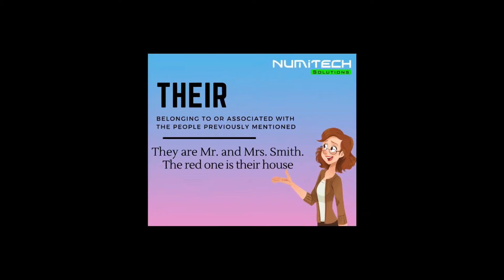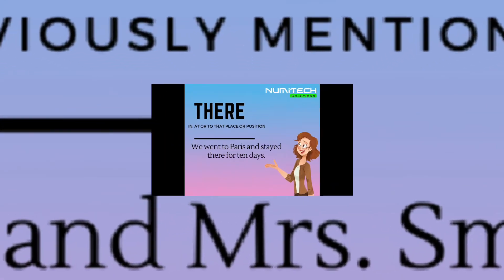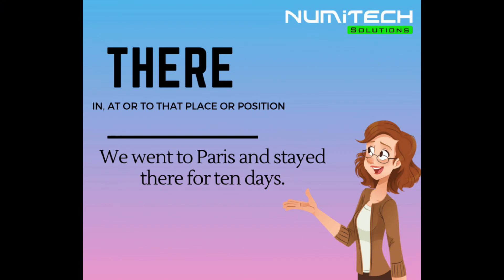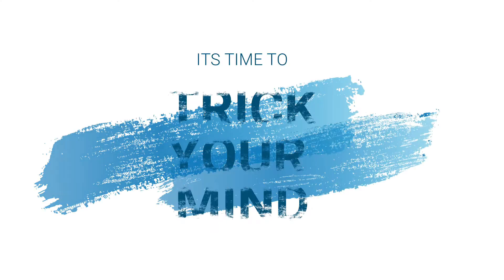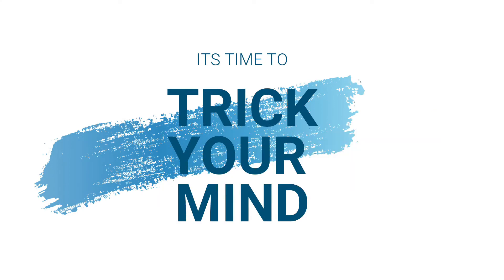'Their' is used when referring to belonging to or associated with a person of unspecified gender. And 'there' is used to refer to distinct things that are not here but are there. There is a very simple trick to remember the difference between 'their' and 'there.'